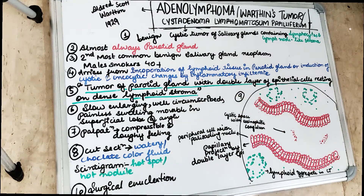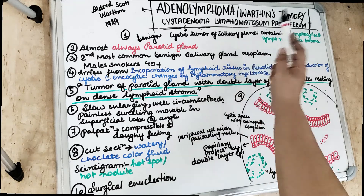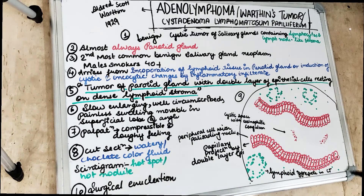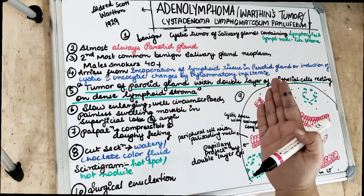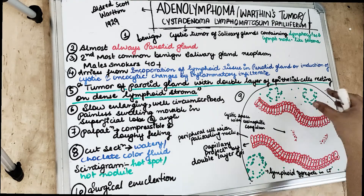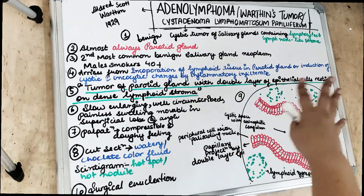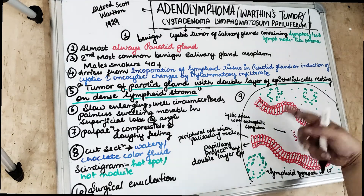In the connective tissue we are going to see lymphocytes — inflammatory infiltrate, as the name 'lymphomatosum' suggests. So we will see lymphocytes in the connective tissue stroma. There is going to be lymphoid tissue which invades the parotid gland. This is a tumor of the parotid gland with a double layer of epithelium resting on a dense lymphoid stroma. You don't have to memorize it as-is — break the name: adenolymphoma means lymphocytes in the connective tissue. The second key histopathologic feature is the double layer of epithelium.